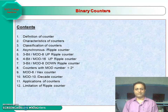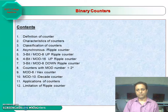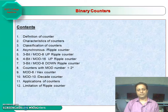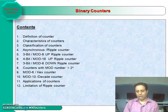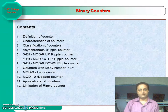Before we start with the basics of counters, in digital electronics we have two types of circuits. One is the combinational circuit, wherein the output depends upon the combination of the inputs. Multiplexer, demultiplexer, encoders, and decoders are examples of combinational circuits.